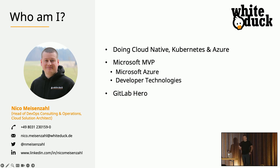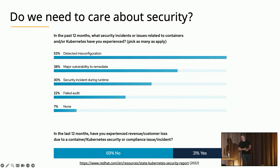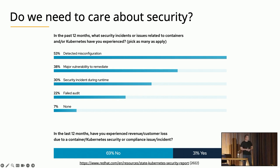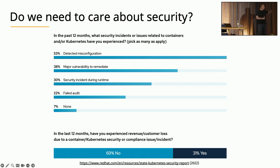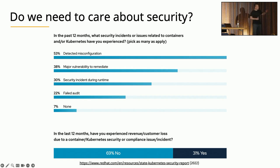Why do we need to talk about security? This is a screenshot from Red Hat's Kubernetes security report from last year. As you can see, we still have a need to improve our security. Based on the first measurement, 53% of configuration issues are security-related, 38% involve major vulnerabilities to remediate, and — even scarier — 30% of security incidents occurred during runtime in production.